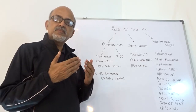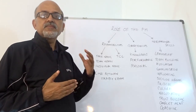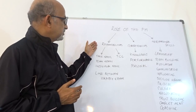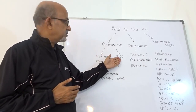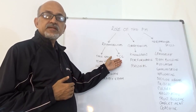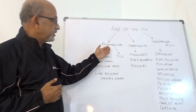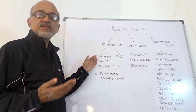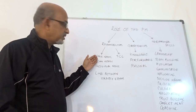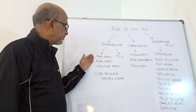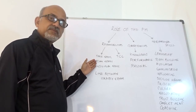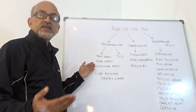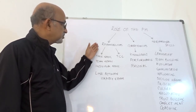Let us go one level deep into the roles and responsibilities of the project manager. The project manager is accountable for completing the project within the agreed upon time, cost, and scope. The project manager is also supposed to meet the task needs — tasks must be staffed and completed, and if there are impediments, the project manager is supposed to solve them. As a project manager, one must also take care of team needs and individual needs like goal setting, career planning, and appraisals.